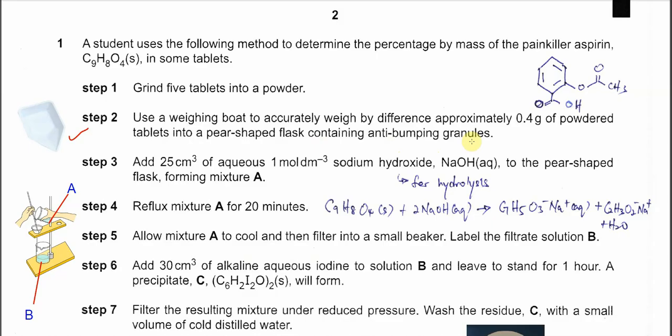After that, add 25 cm³ of aqueous 1 mol per dm³ sodium hydroxide to the pear-shaped flask forming mixture A. Once we add the sodium hydroxide, the hydrolysis will happen. Step 4, we need to reflux the mixture for 20 minutes.